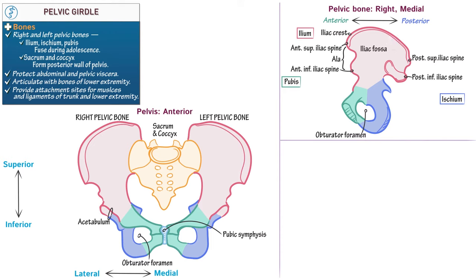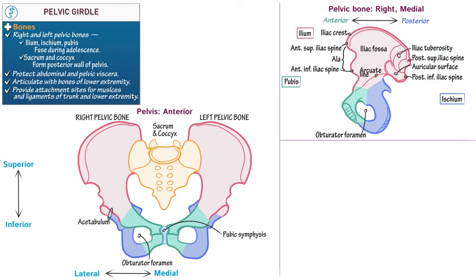Posteriorly, show where the pelvic bone articulates with the sacrum via the auricular surface, which is the ear-shaped area — the word auricle means ear. Also show the iliac tuberosity, which is the larger, roughened area. Indicate the arcuate line, which is a rounded ridge of bone that sweeps from the auricular surface to the pubis. On the pubis, show that the arcuate line continues as the pectineal line.